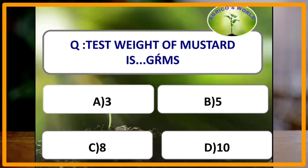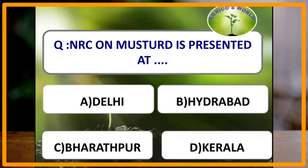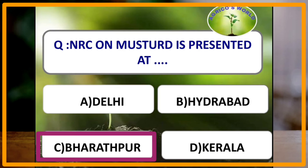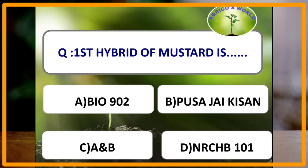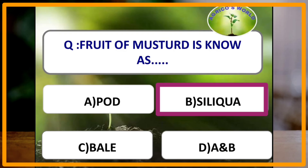Tester weight of mustard is how many grams? Tester weight of mustard is 3 grams. NRC on mustard is present at which state? The answer is Bharatpur, Rajasthan, and it was started in the year 1993. First hybrid of mustard is Pusa Jai Kisan, also known as Bio 902, and it was released by Dr. V.L. Chopra by somatic hybridization. Fruit of mustard is known as Siliqua.